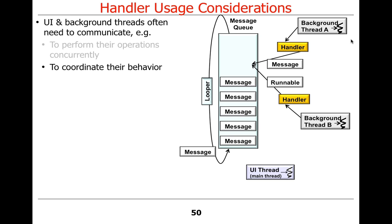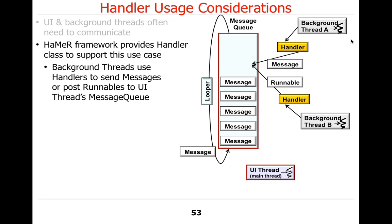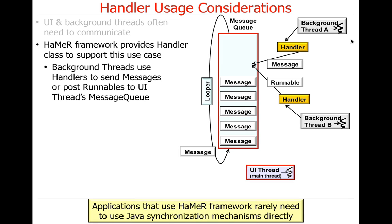You can perform operations concurrently and coordinate the behavior of various things. One interesting thing: if you use the Hammer framework — and this also goes for the async task framework — you just about never have to use Java synchronization mechanisms directly. As a rule of thumb, things like re-entrant lock, condition objects, and all that stuff sort of disappear. This means less work to do, but your program might be less scalable. As you climb the levels of abstraction, you get simplified application development but there may be some overhead relative to writing at a lower level.